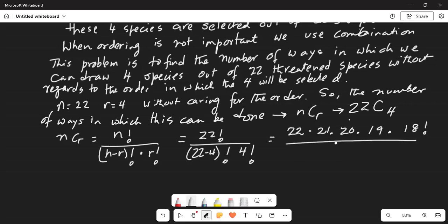multiplied by 18 factorial, divided by 22 minus 4 is 18 factorial and 4 factorial is 4 multiplied by 3, multiplied by 2, multiplied by 1.